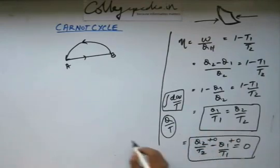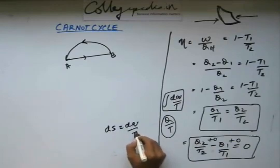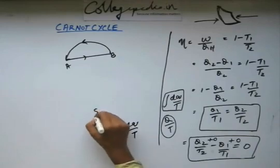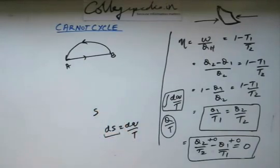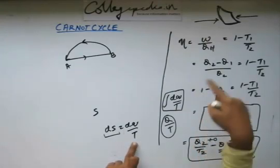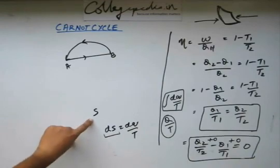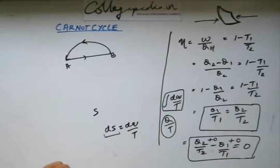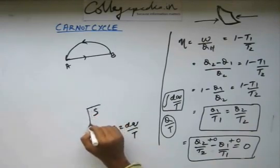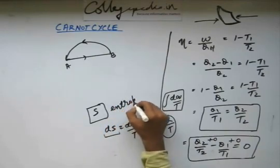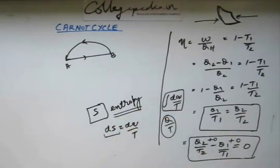If I define dS equal to dQ by T, and I add dS in all four steps, then that dS is coming to be zero. That means there is no change in S, meaning S is a state function. And that's why dS is equal to dQ by T. Clausius identified that there is a physical quantity equal to dQ by T. That quantity was given the symbol S and was called entropy.